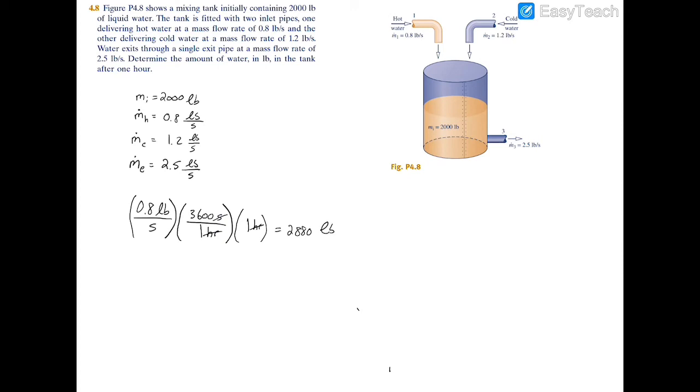So let's go ahead and start off an equation here. So you have your initial 2000 pounds, that's your m dot i, or just m_i, there's not a rate, and then to that you're going to add your 2880.